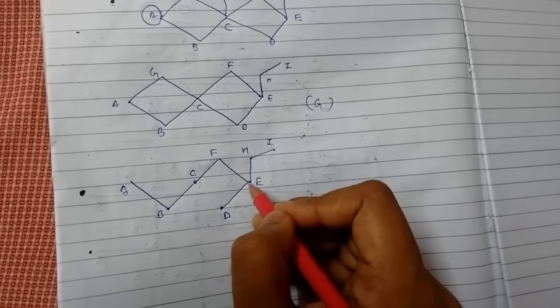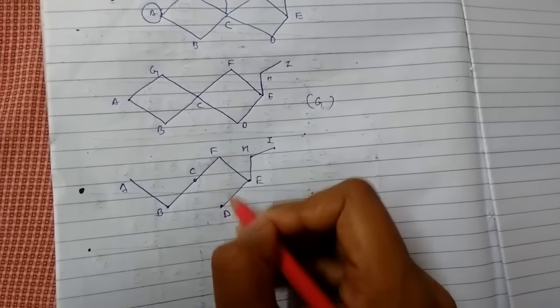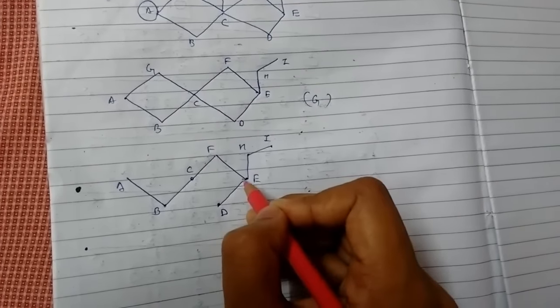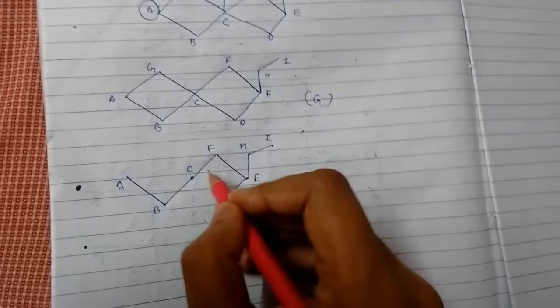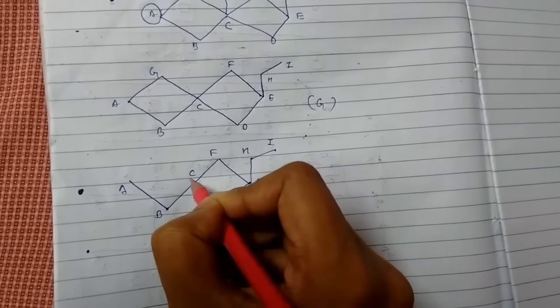Now again we will backtrack here from here. From D we will backtrack to D to E, E to F and up to C and we will write G.